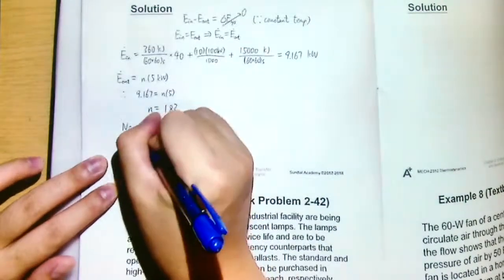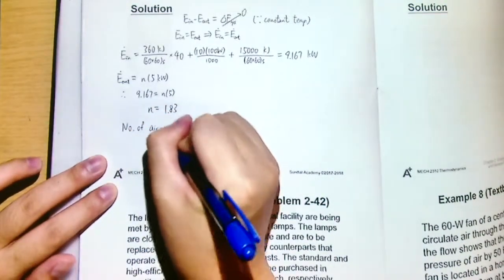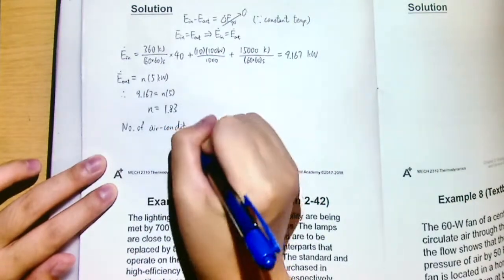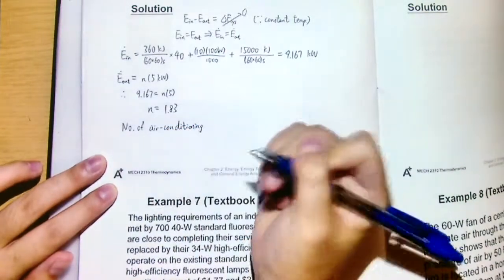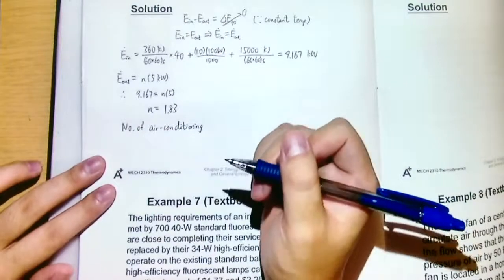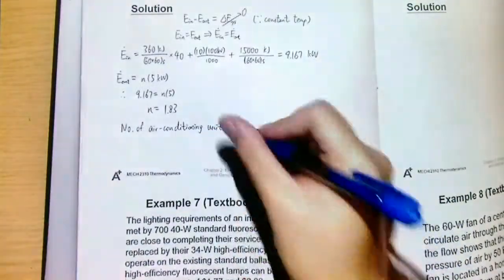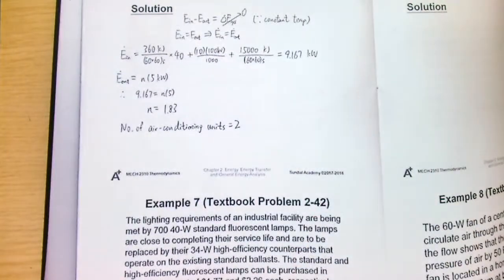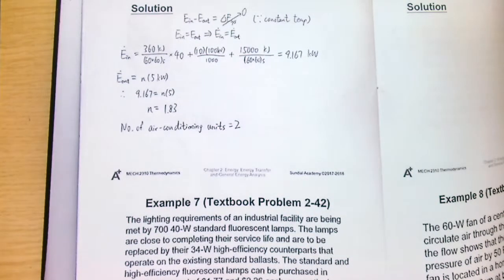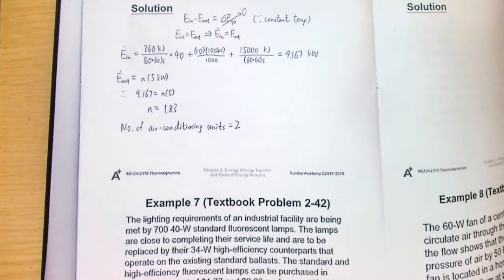So in this case, what's the number of air conditioning units required? One or two? Round up or round down? It should be two. The reason is that if we only have one air conditioning unit, it cannot satisfy this condition. So we need two units so that we can at least maintain this constant temperature. Otherwise the classroom would heat up.